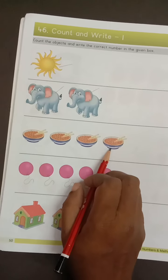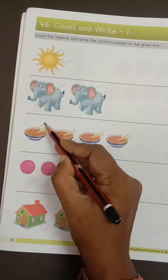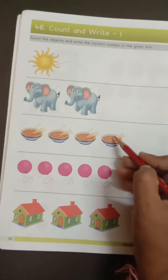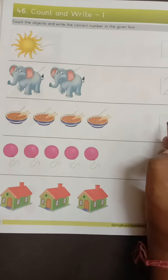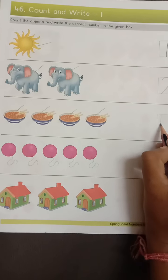So how many bowls are there? One. Two. Three. Four. Four bowls are there. So write number four.